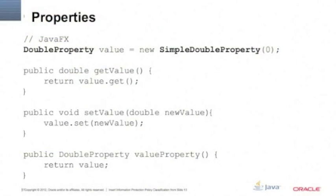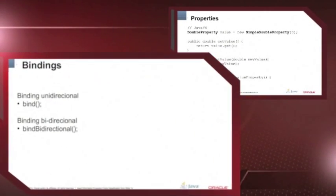JavaFX is really easy to code. Most of the things you're going to do is define properties with these classes — not using the primitives of Java. You're going to preferably use, for example, the SimpleDoubleProperty of JavaFX. Why? Because you want to tie this value, this object, to a UI component to show what's inside this variable. And why is this interesting?